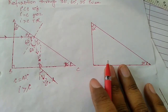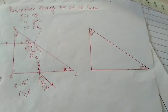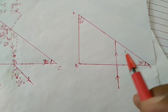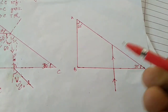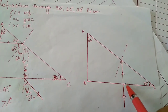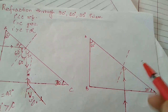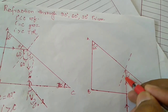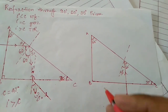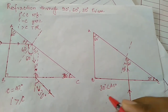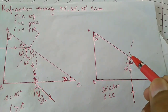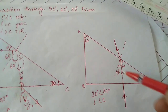Another example with the same prism, but the light now enters from the BC surface. Since the ray is itself coming normally, it will go straight. We draw the normal to calculate the angle of incidence. We can see 30, 90, leaving 60 — and since the normal makes 90, the angle of incidence is 30 degrees. Since 30 is less than the critical angle of 42 degrees, refraction will occur and the light will exit the prism, moving away from the normal.